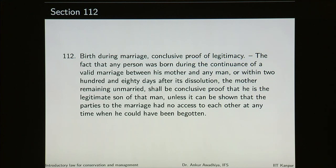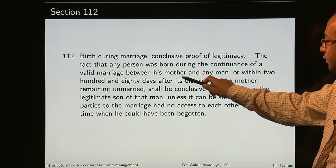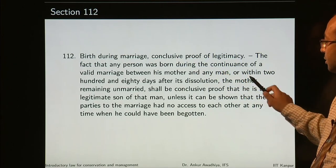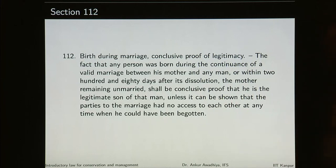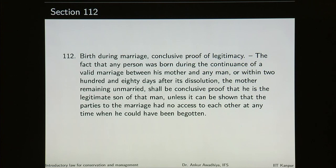Section 112 — birth during marriage, conclusive proof of legitimacy. The fact that any person was born during the continuance of a valid marriage between his mother and any man, or within 280 days after its dissolution with the mother remaining unmarried, shall be conclusive proof that he is the legitimate son of that man, unless it can be shown that the parties to the marriage had no access to each other at any time when he could have been begotten. This is a conclusive proof — it does not have to be proved again.